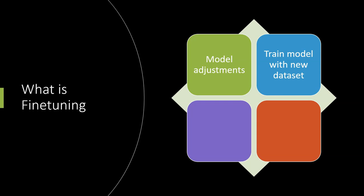Don't think that fine-tuning completely flushes off your existing model capabilities — it's about adding more to it and introducing new patterns. This approach allows your model to learn new patterns and features from the new dataset while retaining the knowledge from the original dataset. Fine-tuning is often used in natural language processing tasks such as sentiment analysis, text classification, and question answering systems. In a nutshell, it's just about adjusting your model with more data to get more performant output.